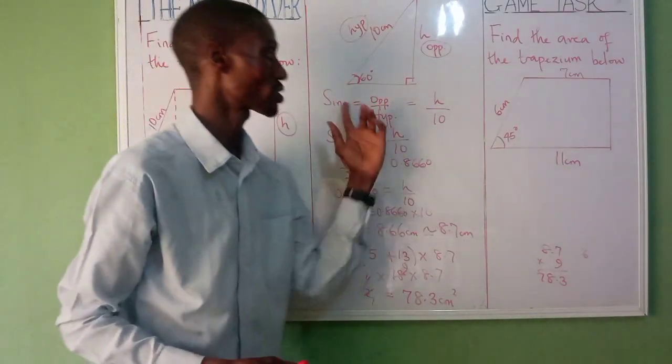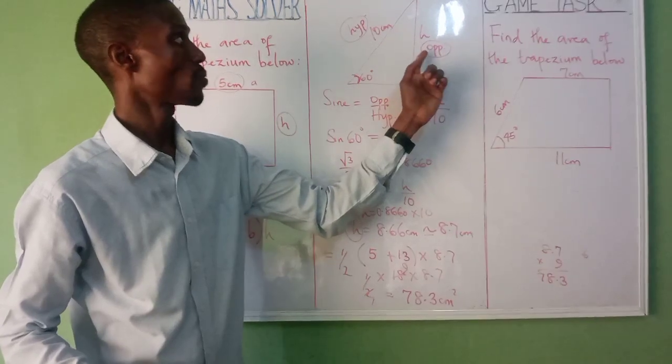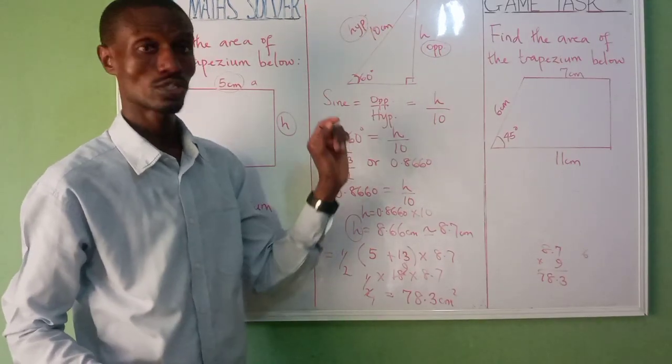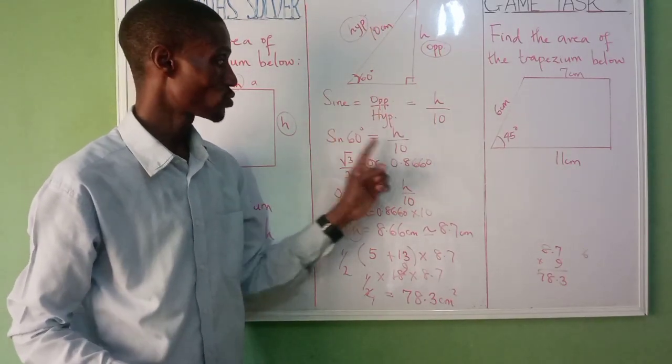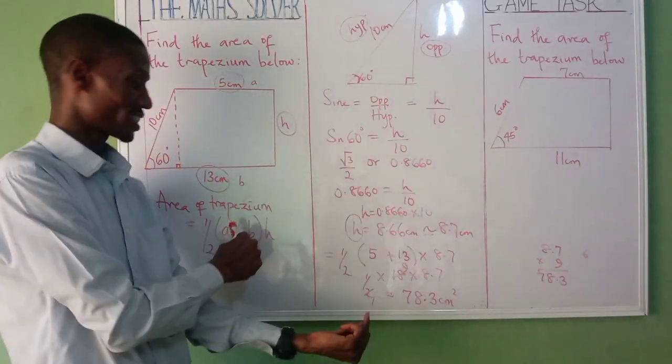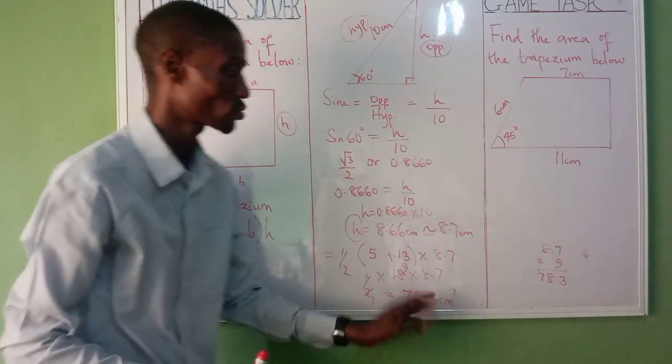So you then use your sine, because sine is combining opposite and hypotenuse together. So you combine it, you get your height, and you now substitute it in this equation and get your answer. Straightforward. It's very simple.